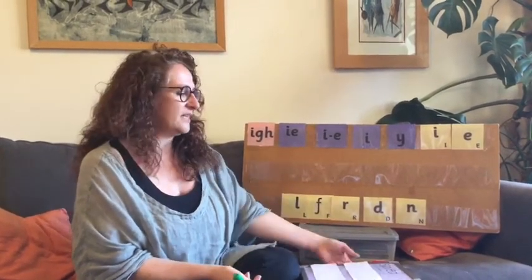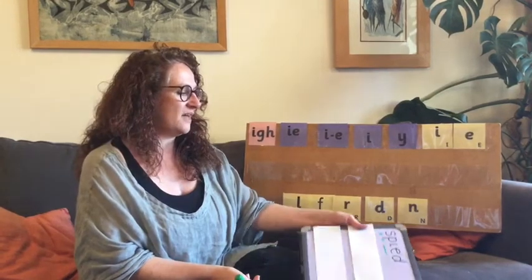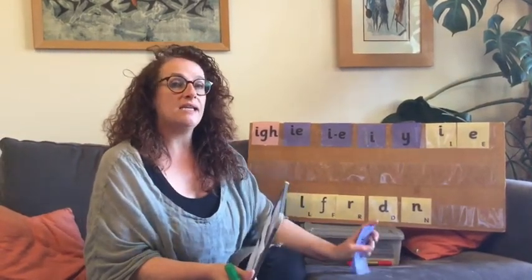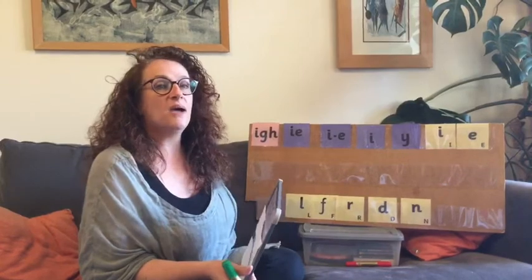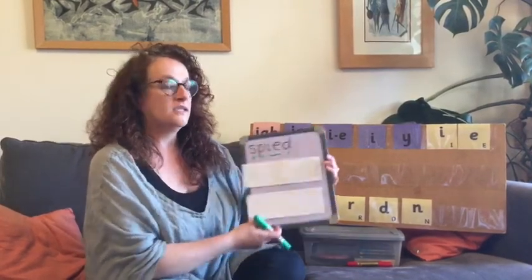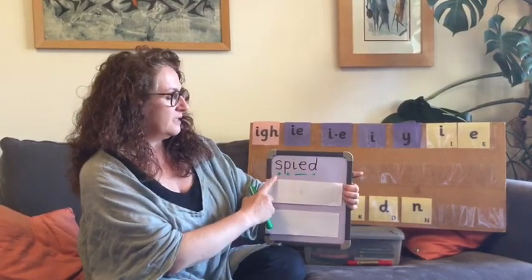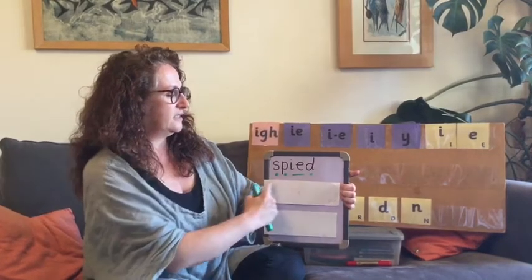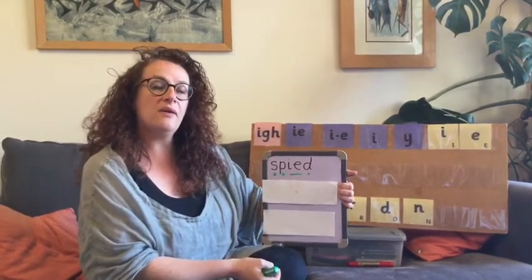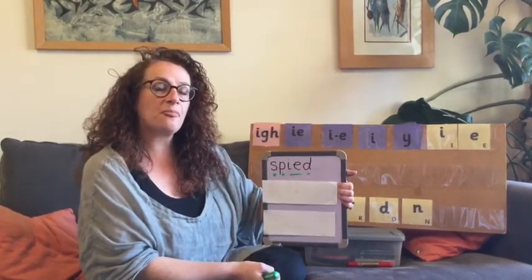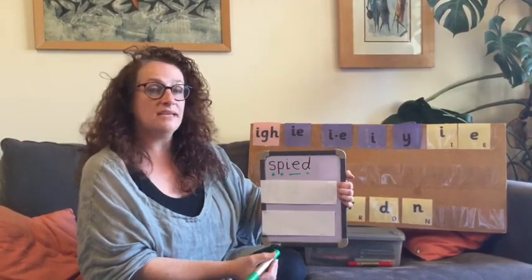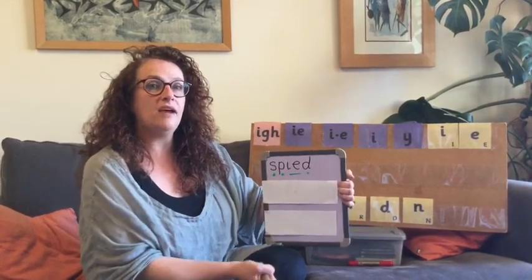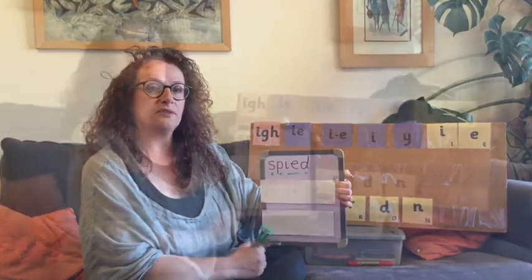Brilliant. So let's have a look together then. So our first word was 'spied' — I spied an ant in the garden. So let's have a look. Spied. Did you get that one? If you didn't, it doesn't matter. Just correct it, make it right, and then we'll move on to the next one.